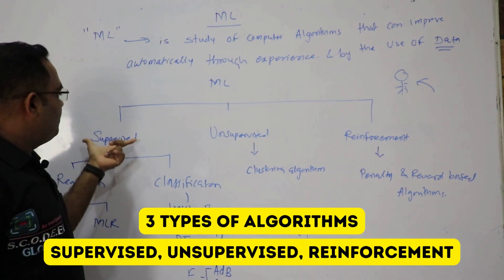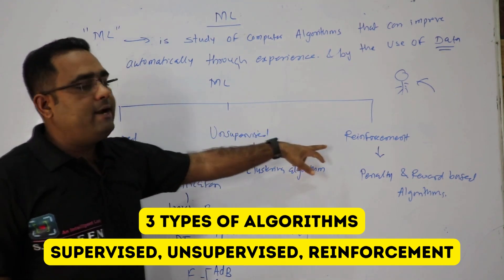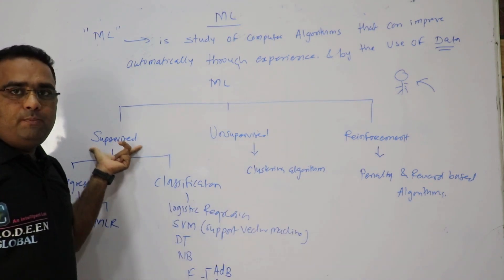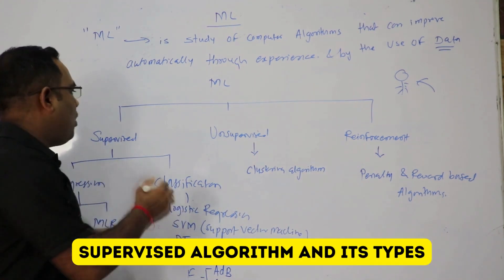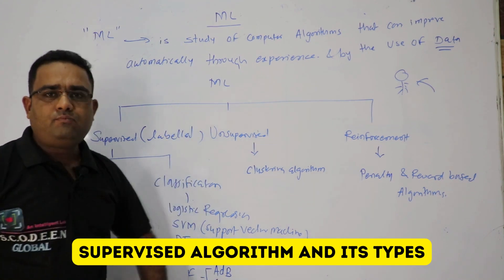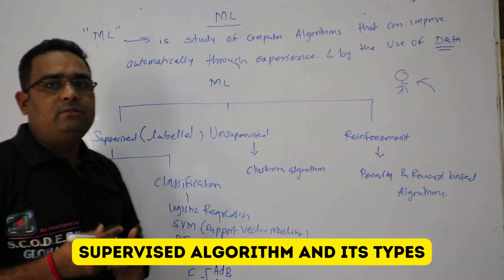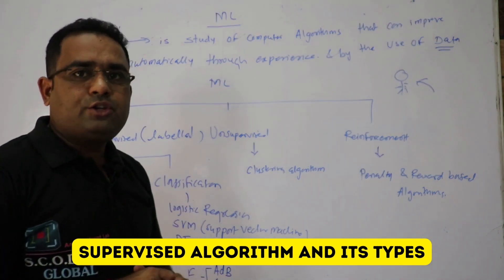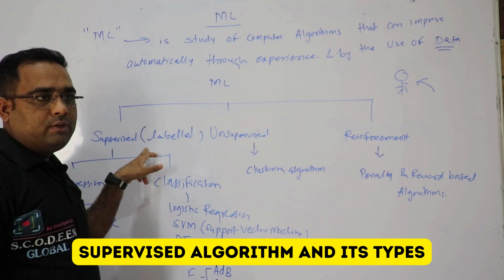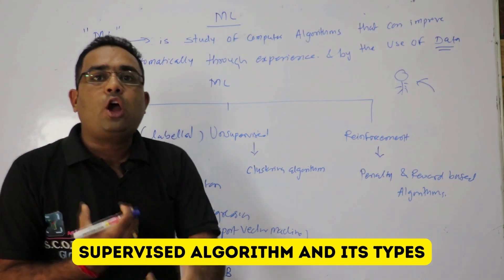In machine learning, we have three types of algorithms: supervised algorithm, unsupervised algorithm, and reinforcement algorithm. In supervised algorithm, that means we have label data. We'll see this in detail while studying linear regression, logistic regression, and so on. Supervised algorithm is nothing but we have data along with the label.